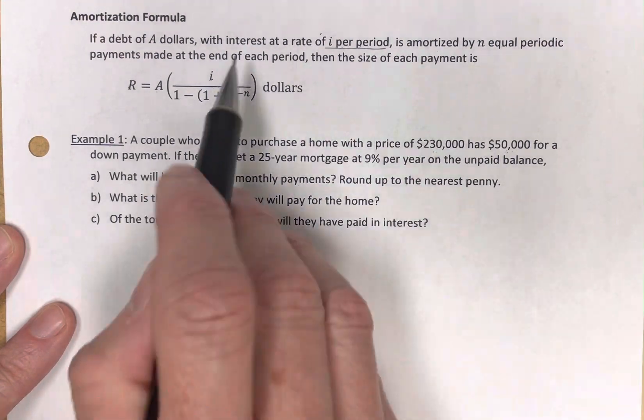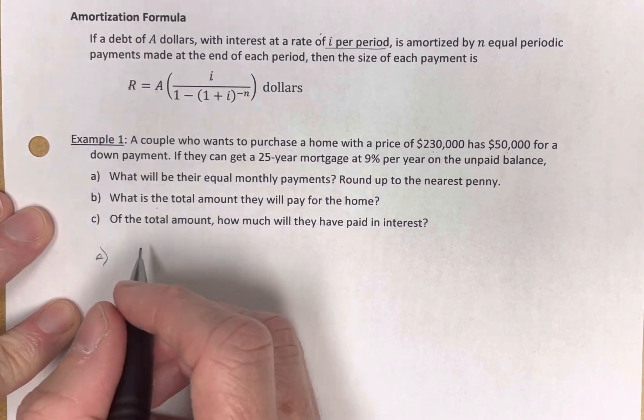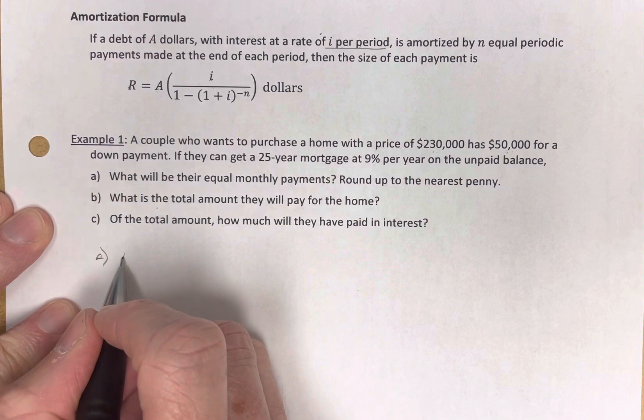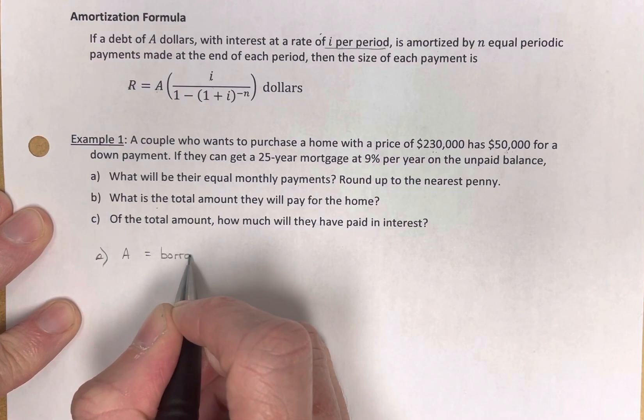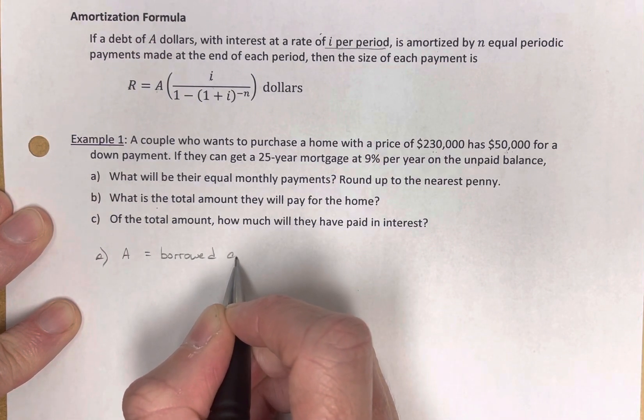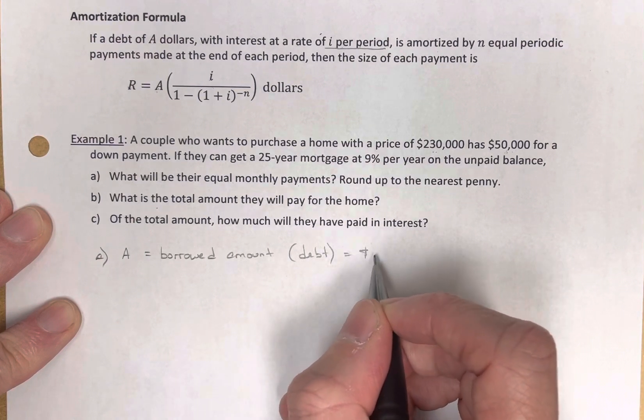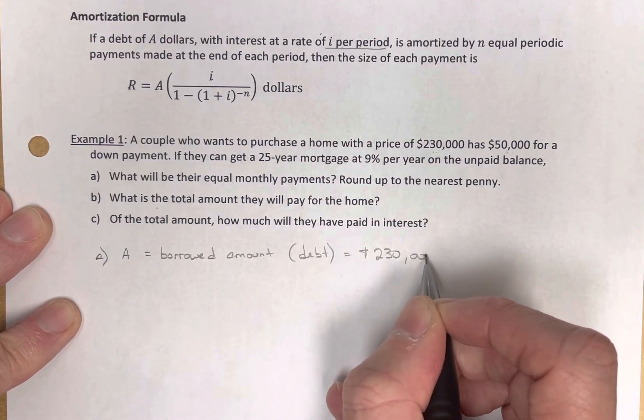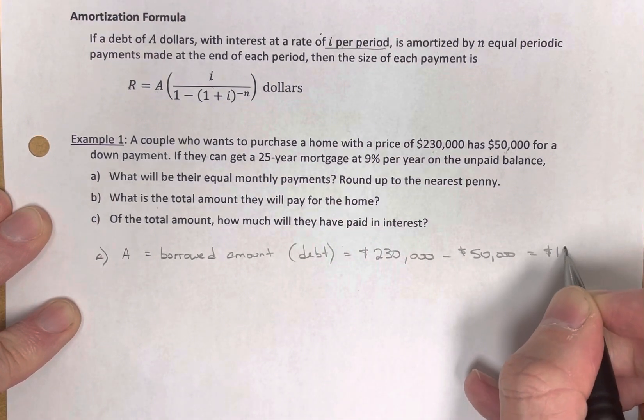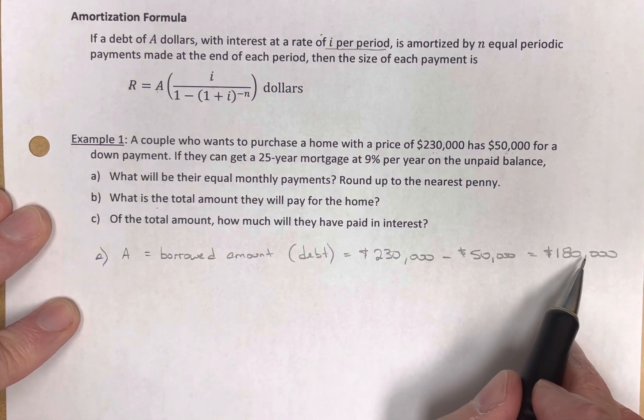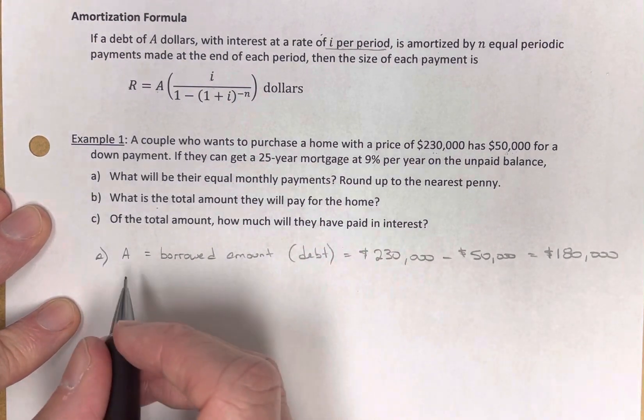So what are their equal monthly payments? That's going to use the amortization formula right there. Letter A. The A is the amount they borrow. So the A is going to be the debt, the borrowed amount. The debt, how much they owe, which is equal to $230,000 minus $50,000, which is equal to $180,000. That's how much they're going to borrow. This is how much we're going to need to pay back. So this is how much we're going to amortize.